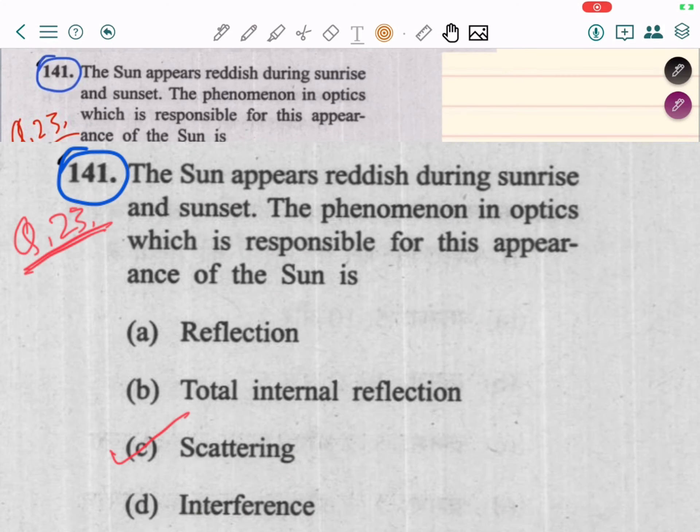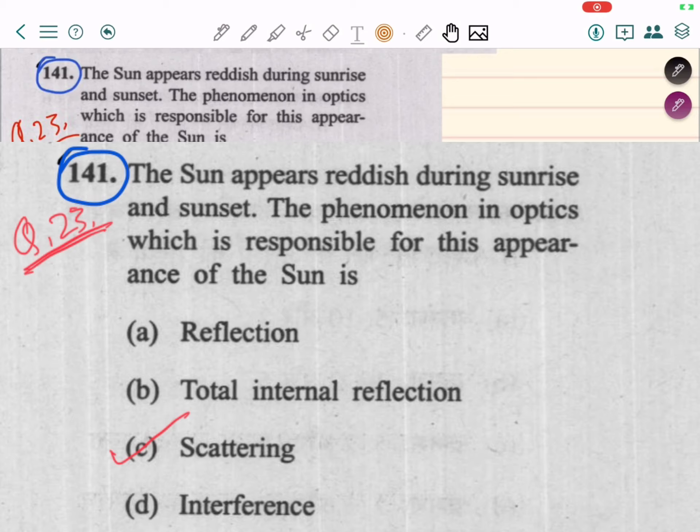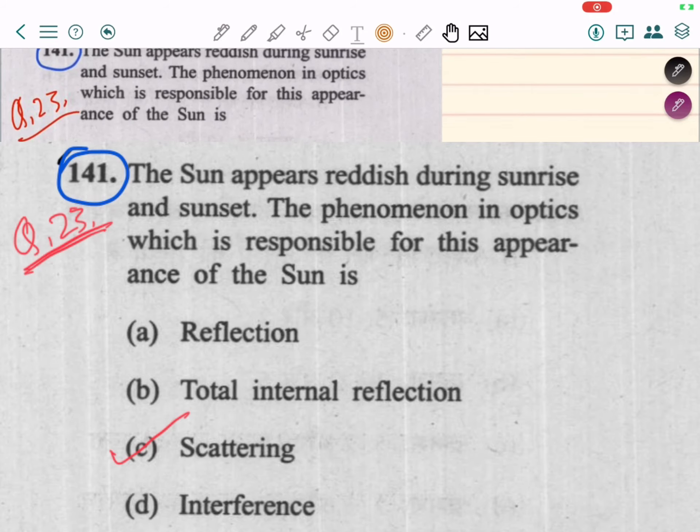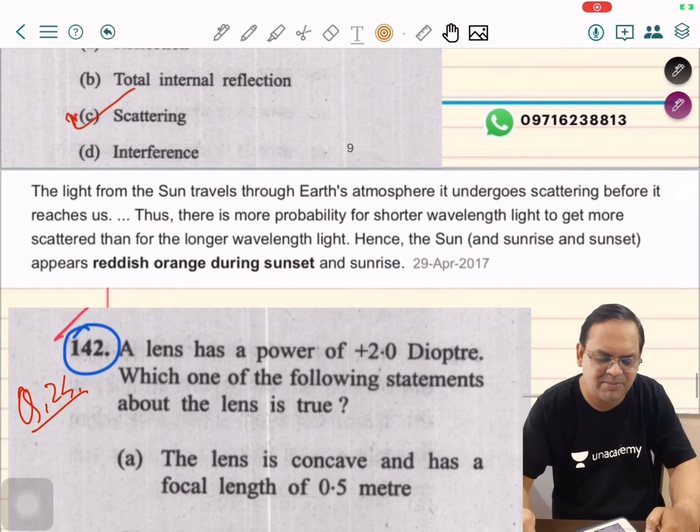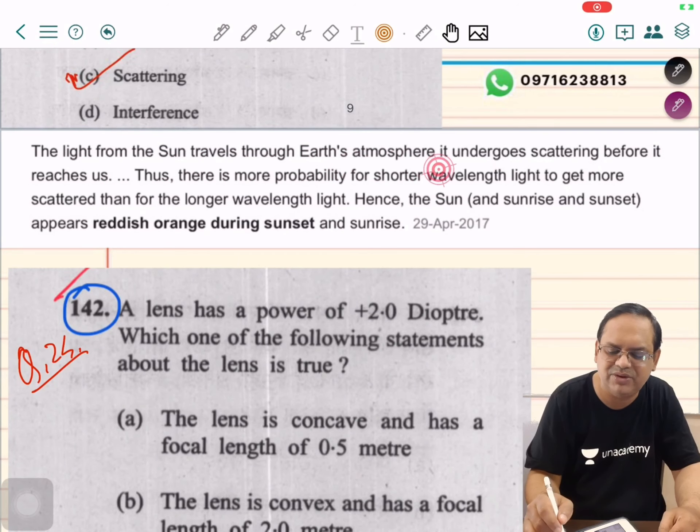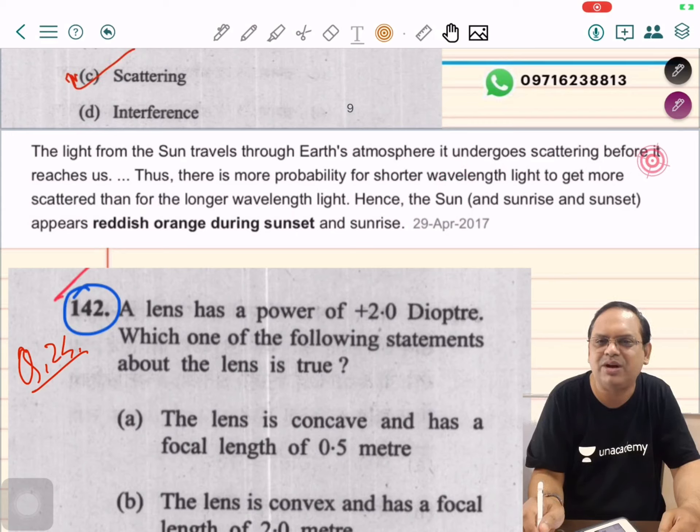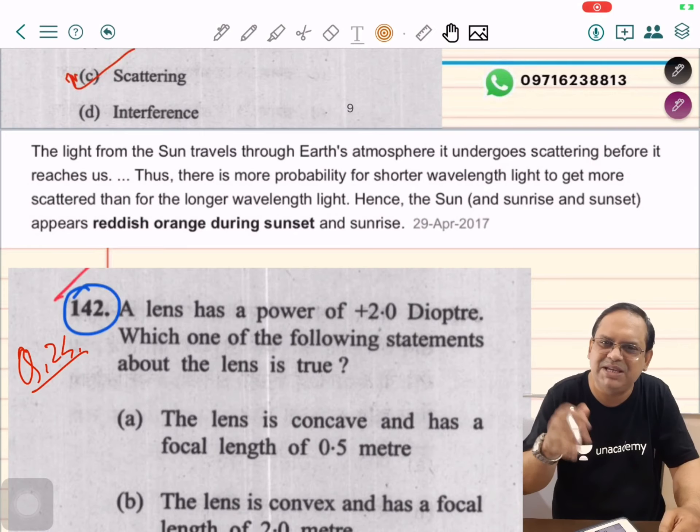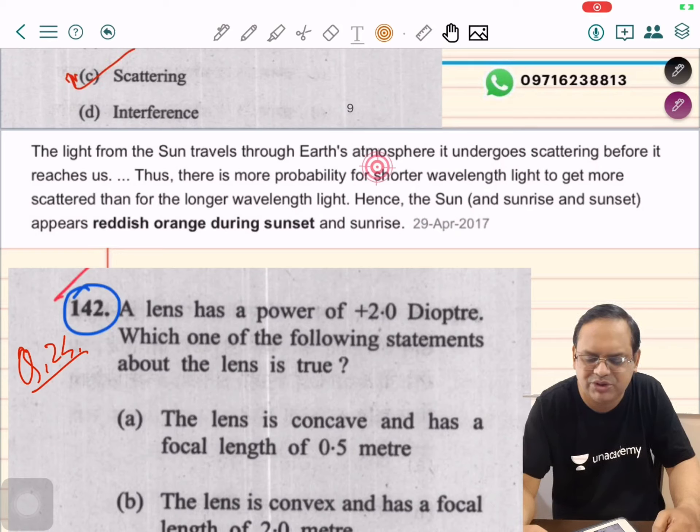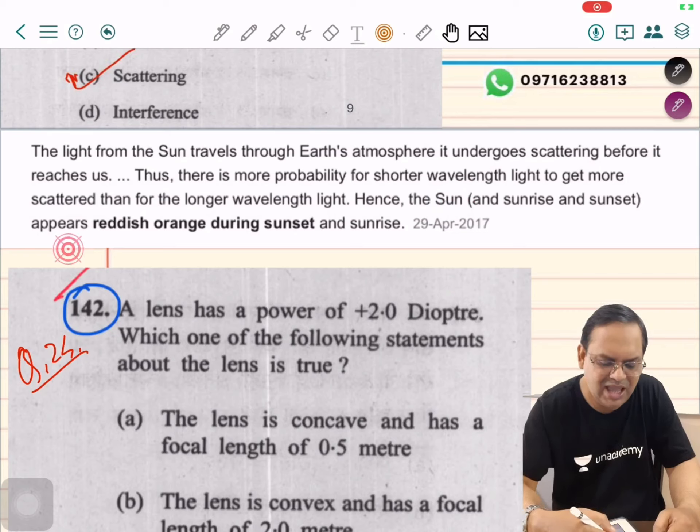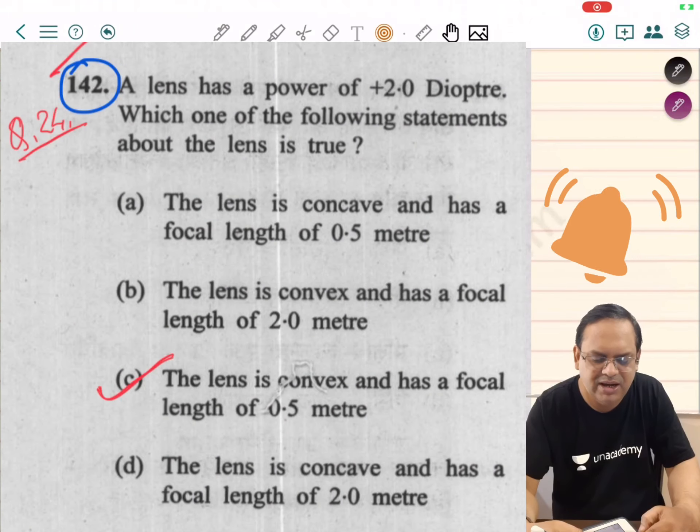Question number 23. The sun appears reddish during sunrise and sunset. The phenomenon in optics which is responsible for this appearance of the sun is C-option. Light from the sun travels through Earth's atmosphere. It undergoes scattering before it reaches us. Thus there is more probability for shorter wavelength light to get more scattered than for the longer wavelength light. Hence the sun during sunset and sunrise appears reddish-orange.